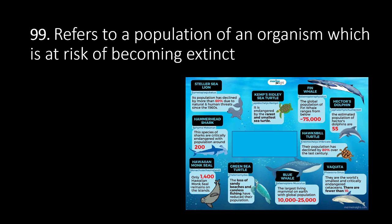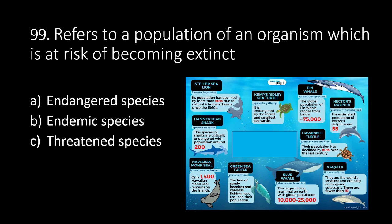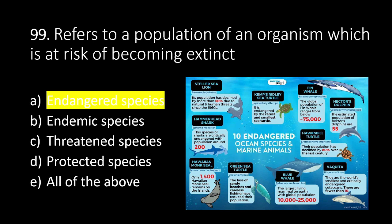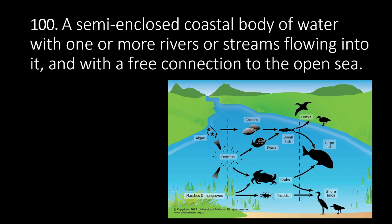Number 99: refers to a population of an organism which is at risk of becoming extinct. A. Endangered species, B. Endemic species, C. Threatened species, D. Protected species, E. All of the above. The answer is A. Endangered species. Endangered species refers to a population of an organism which is at risk of becoming extinct.